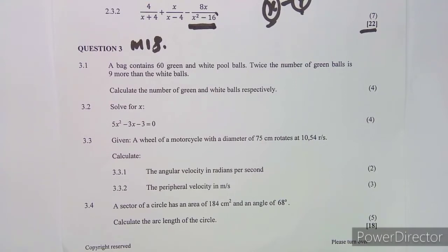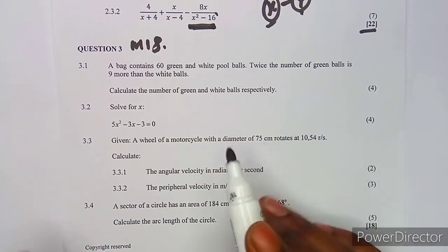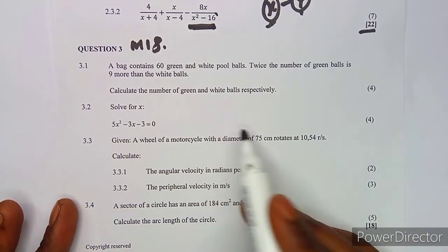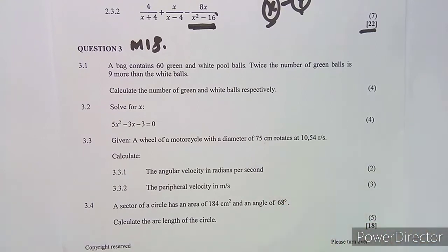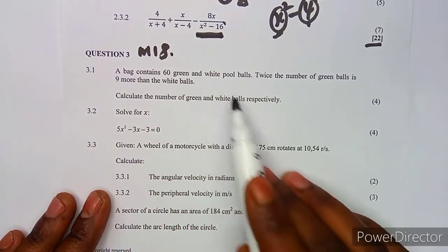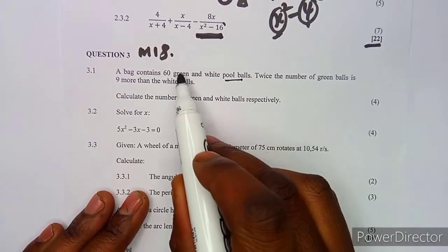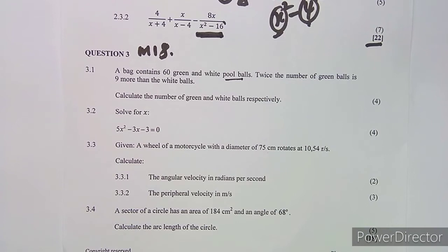This question is a mix of different problem types — the first is simultaneous equations, the second is a quadratic equation, and so forth. On question 3.1, a bag contains 60 green and white pool balls combined, equal to 60 total.